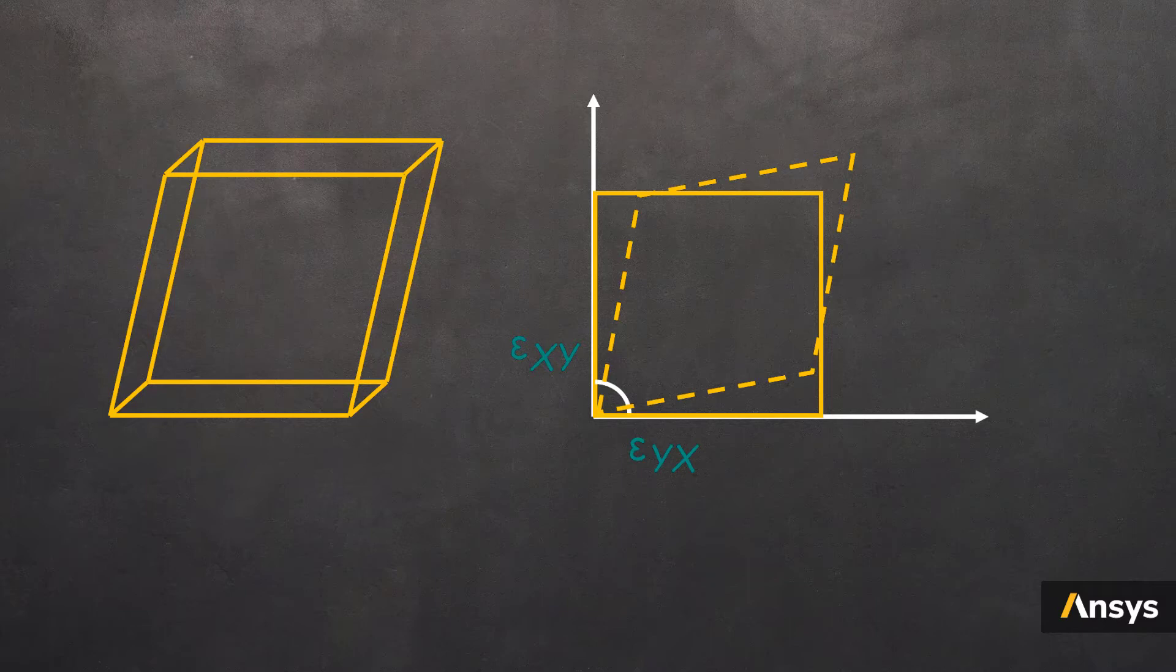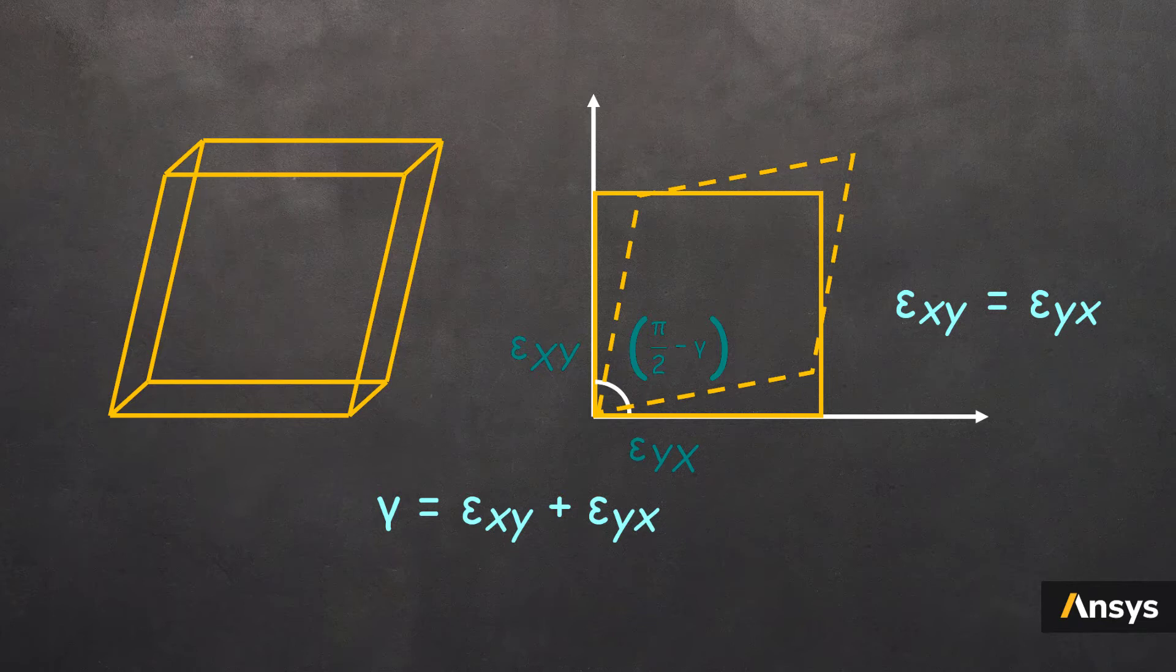But the engineering shear strain is the total change in angle. So it's denoted by pi by 2 minus gamma. So gamma is nothing but the sum of the two shear strains, Epsilon XY and Epsilon YX. But from the symmetry of strain tensor, we know that these two terms are equal. So the engineering shear strain takes this form. Note that this factor of 2 is crucial because in most common practices, the shear strain reported is the engineering strain.